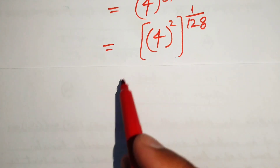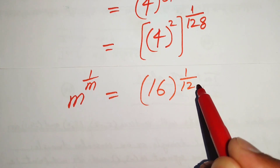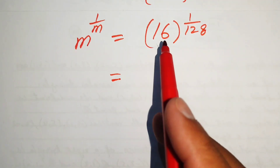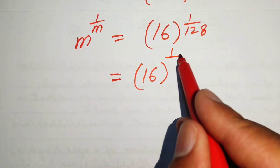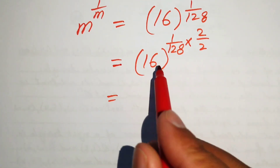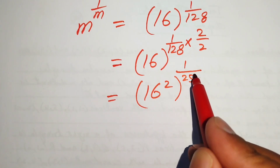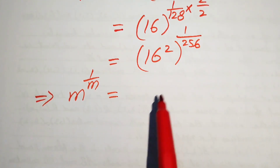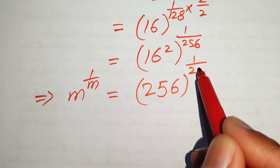So now we have m to the power of 1 over m equals 4 squared, which is 16, to the power of 1 over 128. We repeat the step again: multiply and divide by 2, moving 2 inside the exponent gives 16 squared, and multiplying 128 by 2 gives 256. So we obtain m to the power of 1 over m equals 16 squared, which is 256, to the power of 1 over 256.